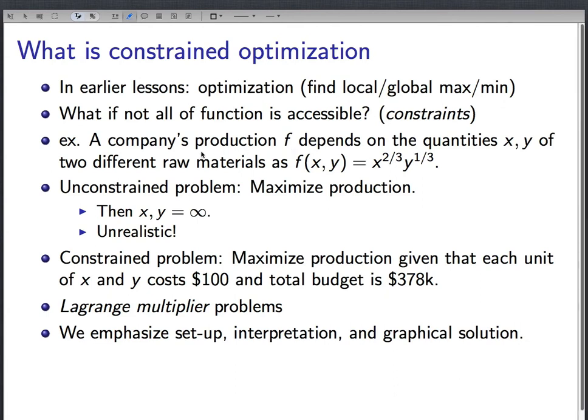So say there's a company, and you're interested in the company's production. And the amount of stuff that this company is able to produce depends on some quantities, x and y, of two different raw materials. And you have some model for the production. If you have x units of the first raw material and y units of the second raw material, the production is given by this function that I've written down here.